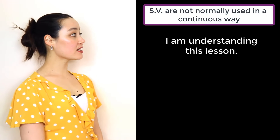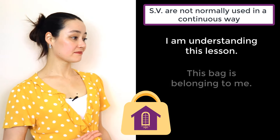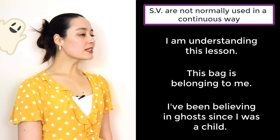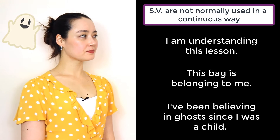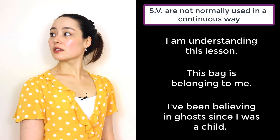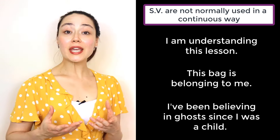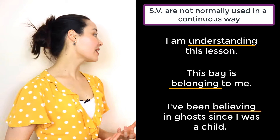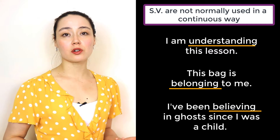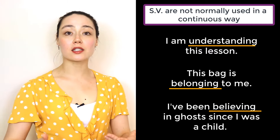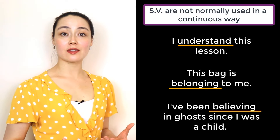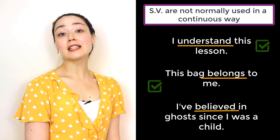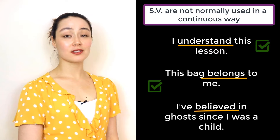'I am understanding this lesson.' 'This bag is belonging to me.' 'I've been believing in ghosts since I was a child.' We can see the stative verbs understand, belong, believe — and these sentences aren't correct. We don't use stative verbs in a continuous way. The correct forms are: 'I understand this lesson.' 'This bag belongs to me.' 'I've believed in ghosts since I was a child.'